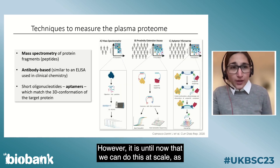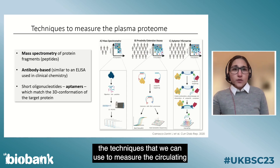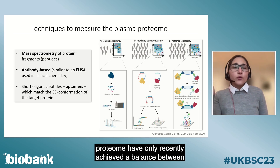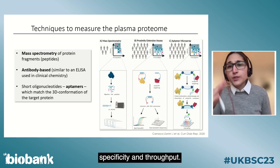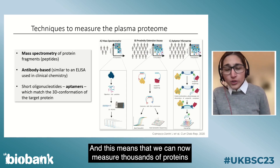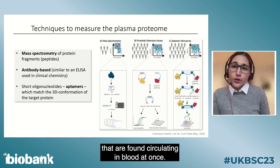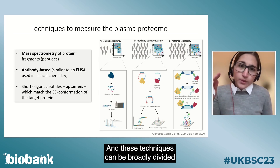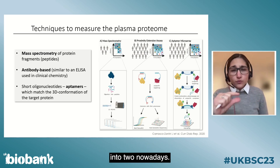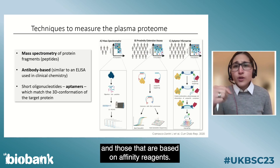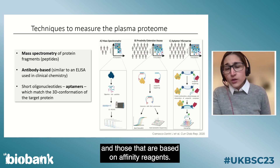However, it is only until now that we can do this at scale, as the techniques that we can use to measure the circulating proteome have only recently achieved a balance between specificity and throughput. This means that we can now measure thousands of proteins found circulating in blood at once. These techniques can be broadly divided into two: those based on mass spectrometry and those based on affinity reagents.